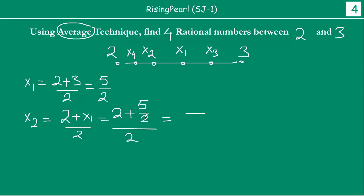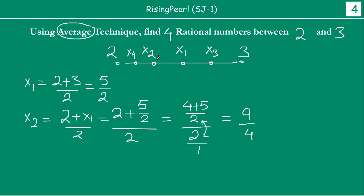So x2 equals (2 + 5/2) divided by 2. The LCM gives us (4/2 + 5/2) divided by 2, which is 9/2 divided by 2, giving 9/4. So the second rational number x2 is 9/4.